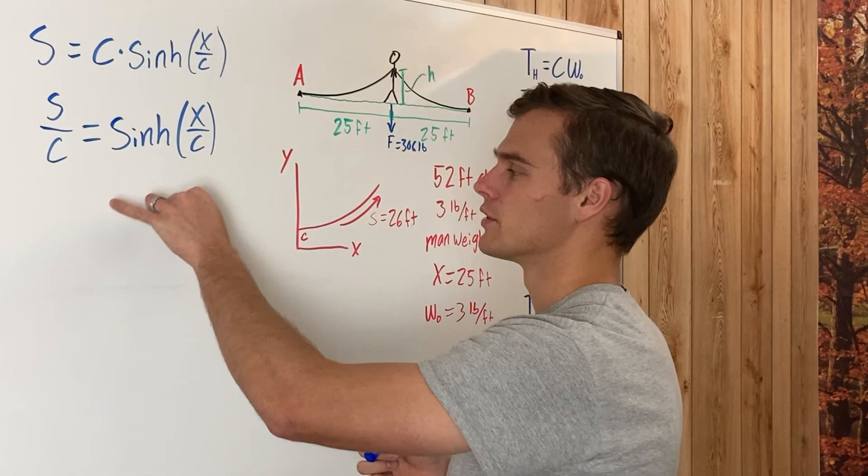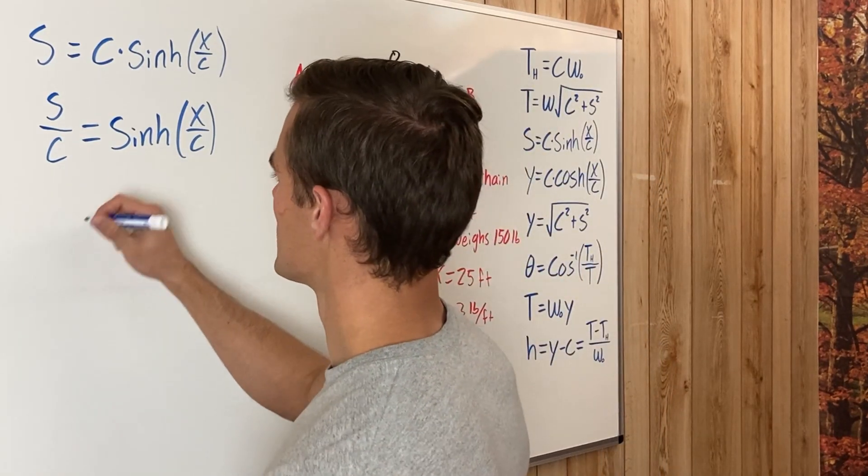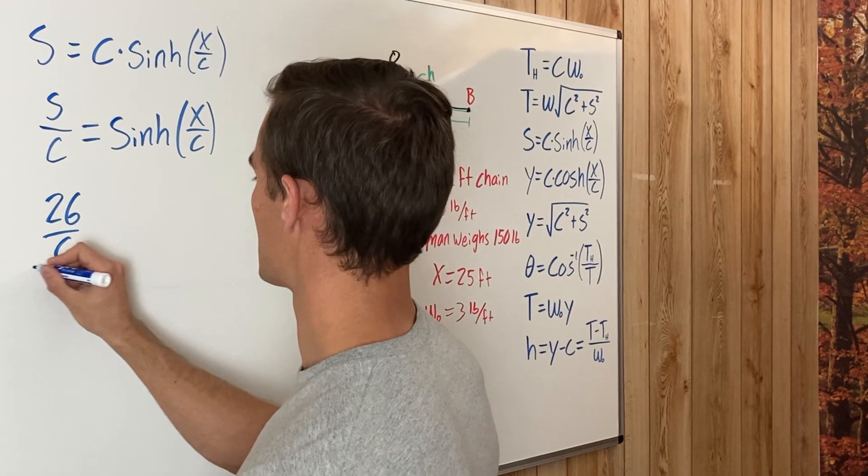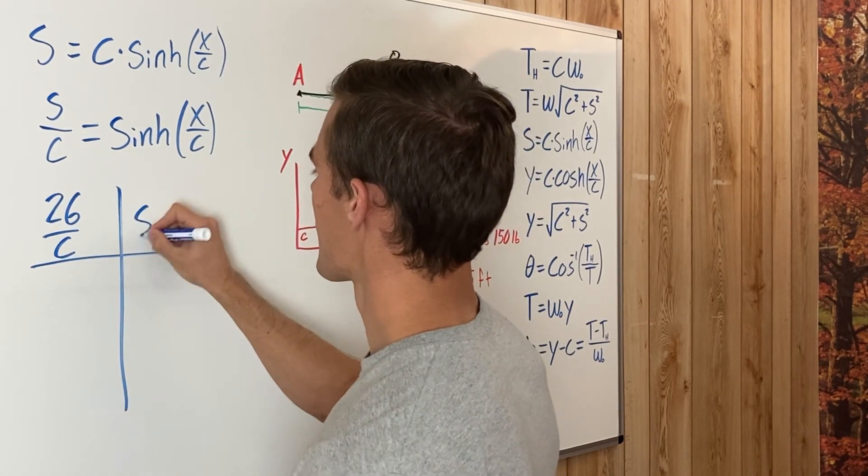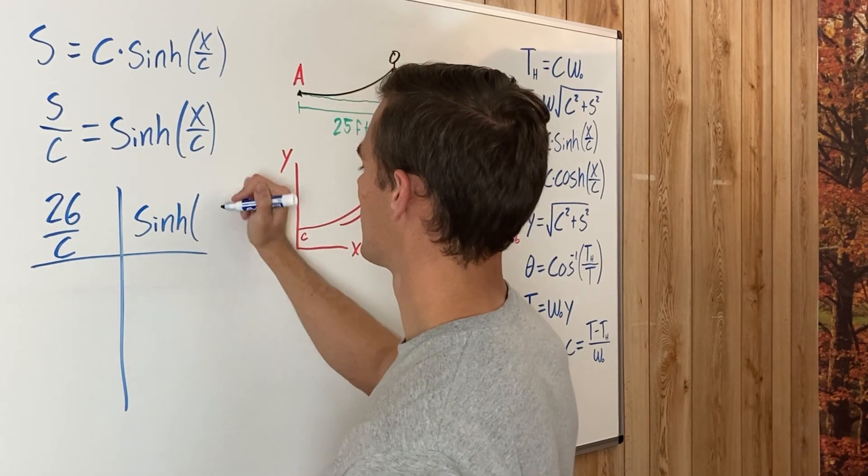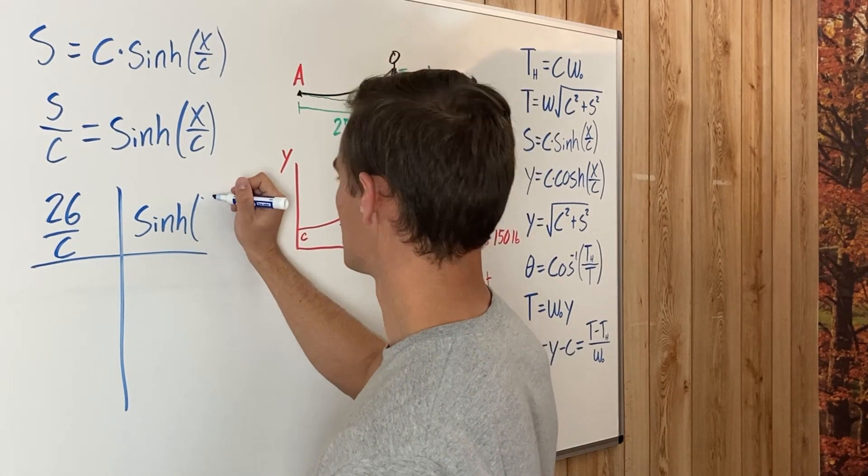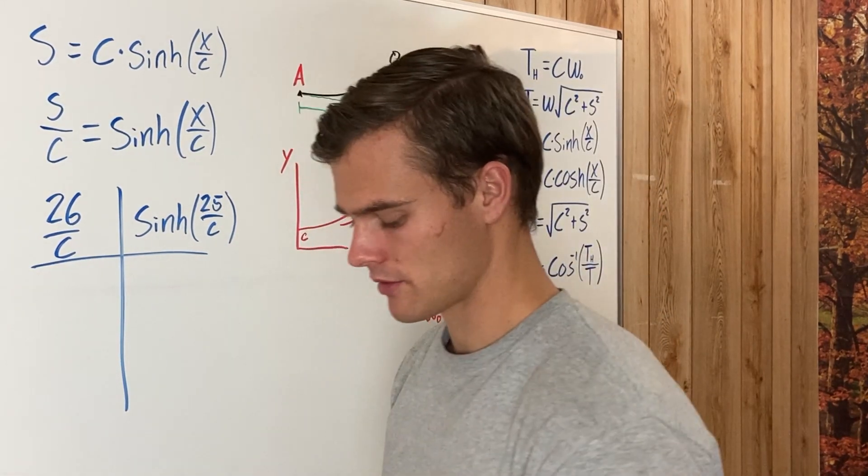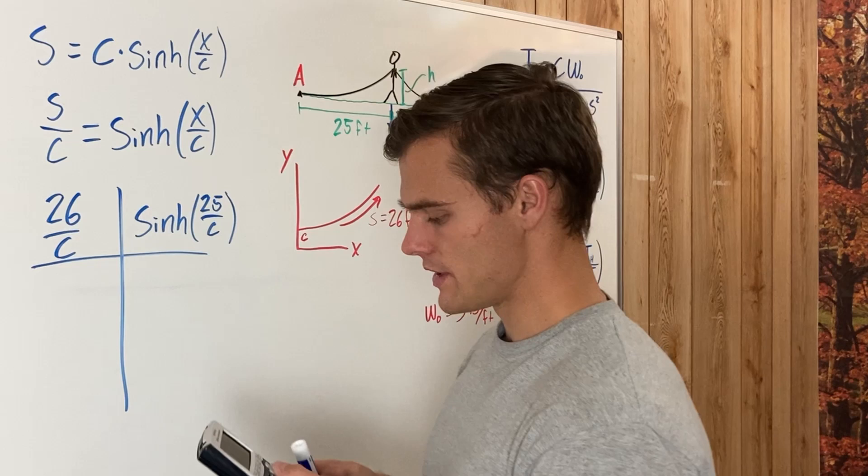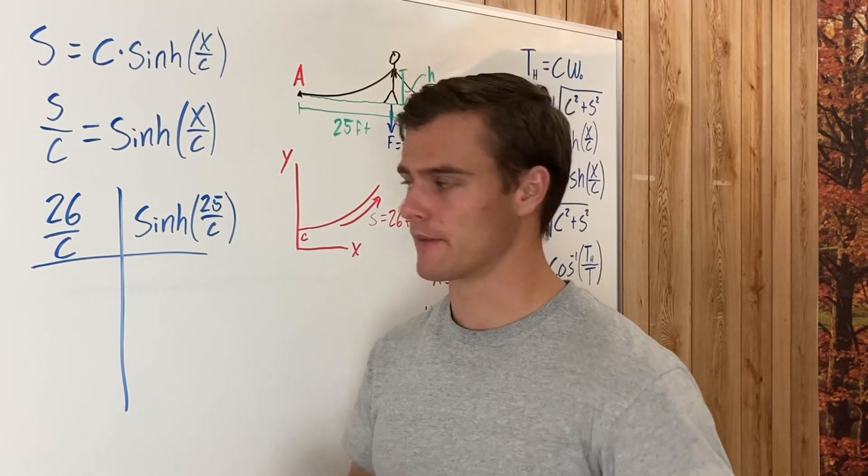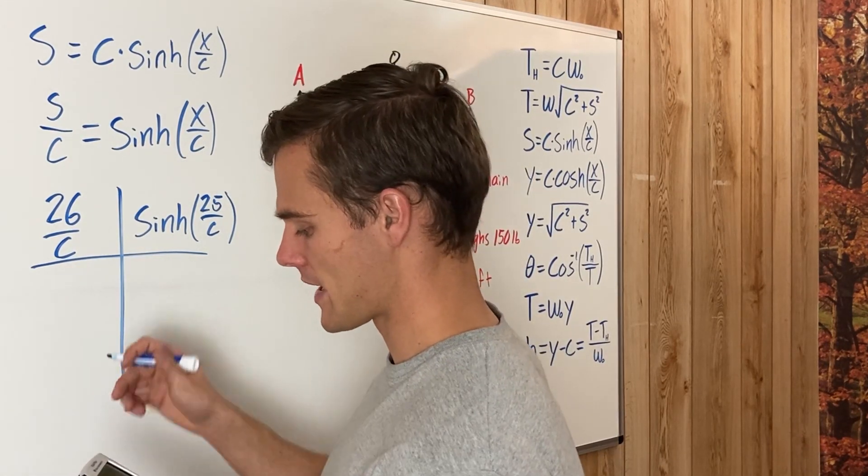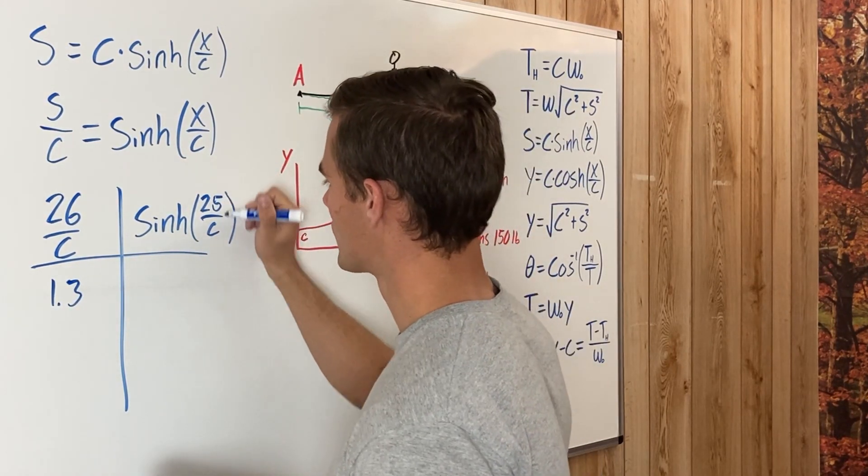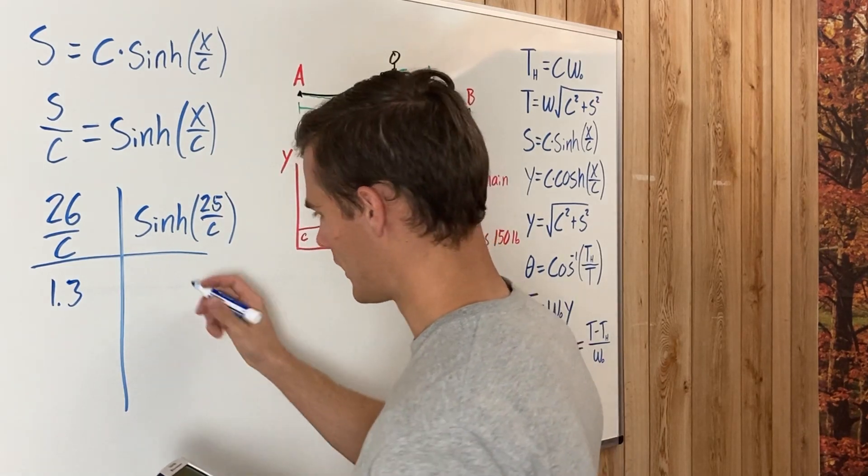We just plug in values for C and try to get them close to each other. So we'll say that this side, 26 which is S divided by C, we'll say that's on this side of the table. And then we have our hyperbolic sine of x, which is 25, divided by C. Let me just plug in values for C. Let's just pick a number and start. Let's say C is 20, so 26 divided by 20 is 1.3. Hyperbolic sine of 25 divided by 20 is 1.602.